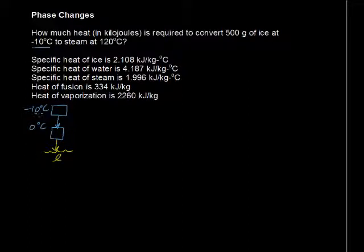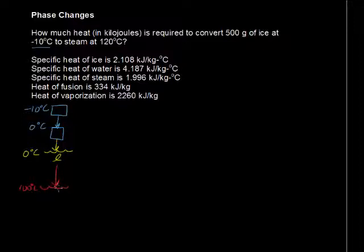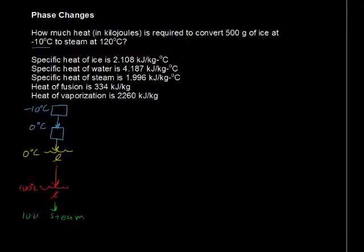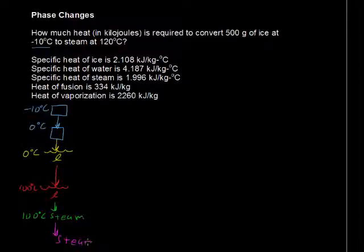Now we're at liquid, which is still at 0 degrees Celsius. The next step after that is to heat that liquid up all the way to the boiling point, which we know is 100 degrees Celsius. We've gotten the liquid up to that temperature, right at the boiling point, but we need then to vaporize this liquid into steam — it'll still be at 100 degrees at this step. And then finally, we will take that steam and increase its temperature another 20 degrees up to 120 degrees Celsius. So we have these five steps, and we have all the information.